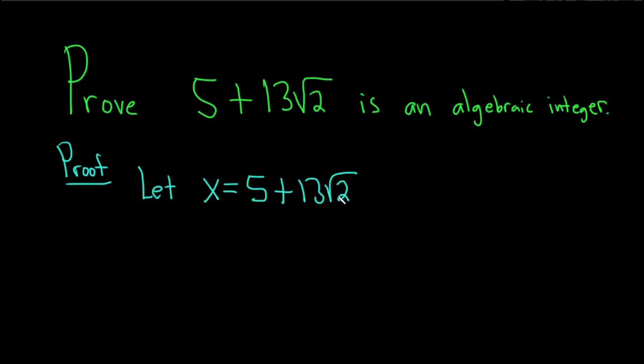So we have to get rid of this square root of 2. So let's go ahead and start by subtracting 5 from both sides. So this gives us x minus 5 equals 13 square root of 2. And now we can eliminate the 2 by squaring both sides. So we'll do that here, and we'll do it here like this.